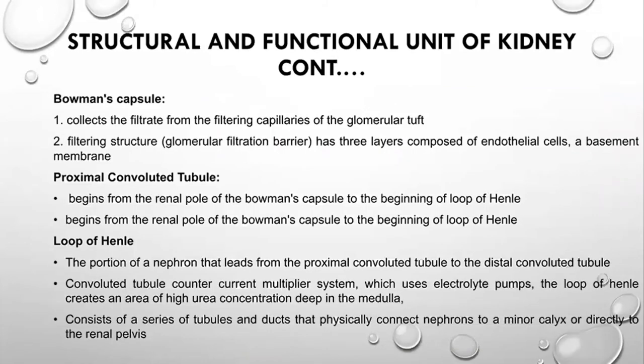In the Bowman's capsule, the substrate is collected from the filtration capillaries of the glomerular tuft. The blood that enters undergoes filtration here. The Bowman's capsule is lined by a semi-permeable membrane with pores that filter all toxic substances from the blood along with water. The filtration structure has three layers composed of endothelial cells and a basement membrane — together called the glomerular filtration barrier.